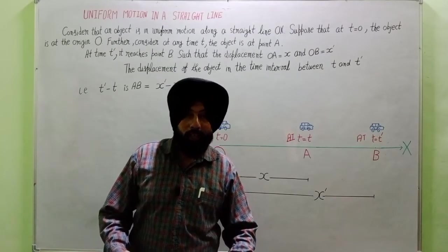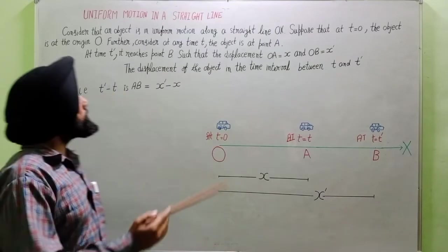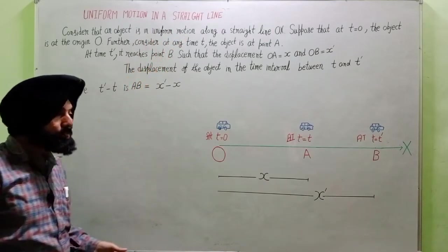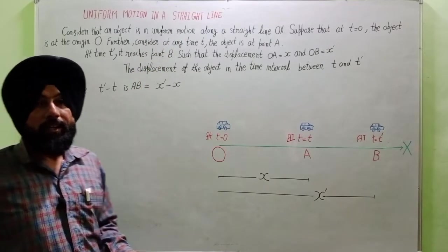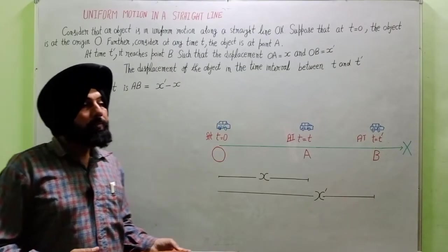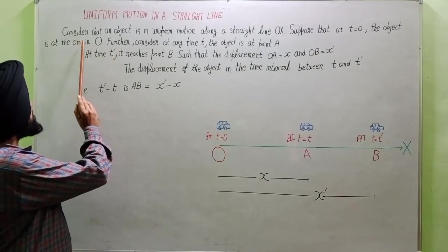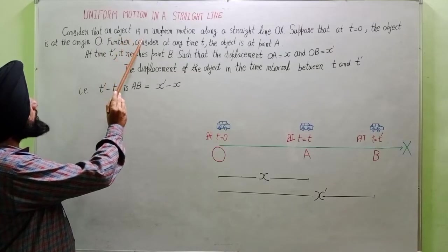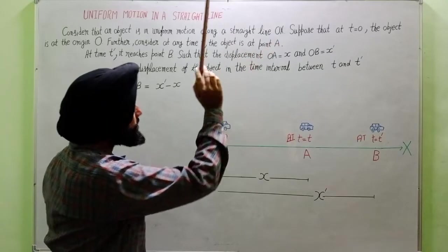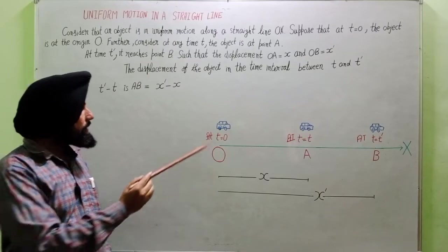Hello students. Now we are doing the topic uniform motion in a straight line, Class 11, subject Physics. In this topic, consider that an object is in uniform motion along a straight line x — we have an object like this.